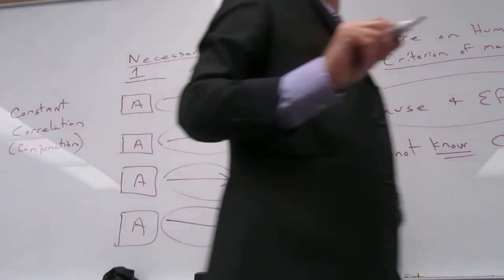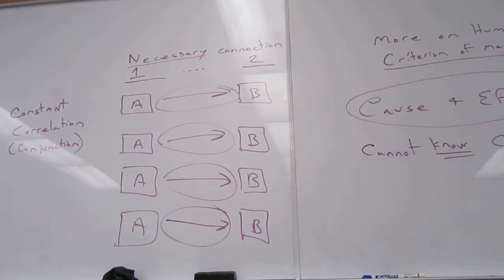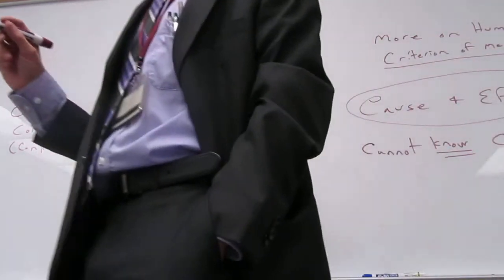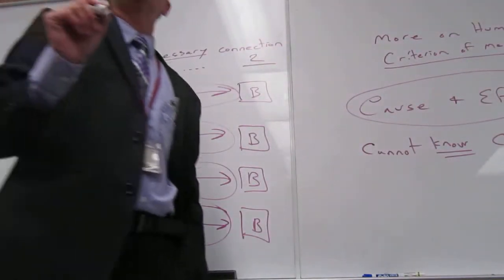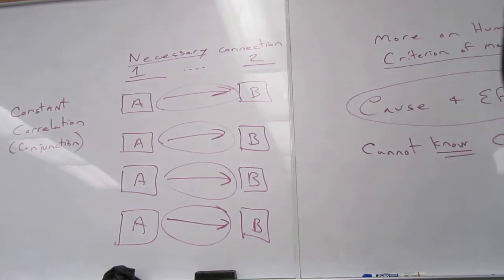What we actually witnessed is what David Hume calls a constant correlation or a constant conjunction. Now, most of you know, have heard what about correlation? Correlation does not necessarily mean causation.